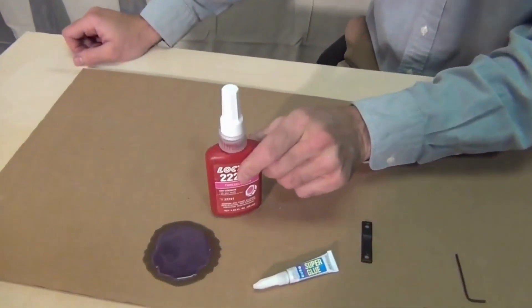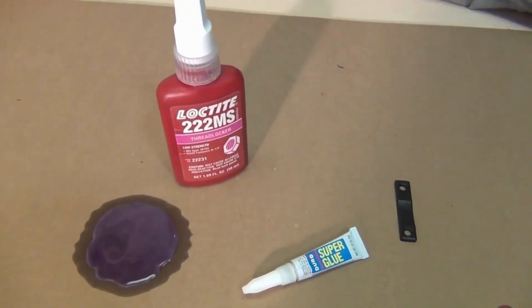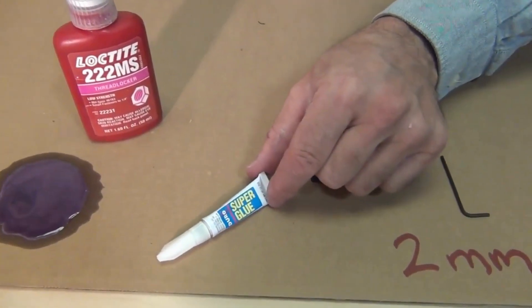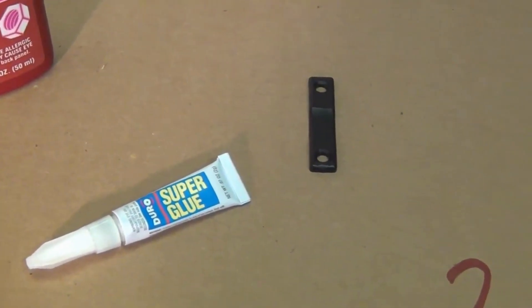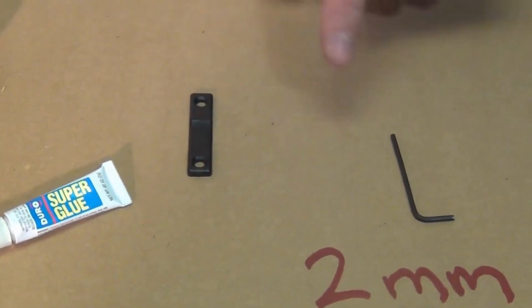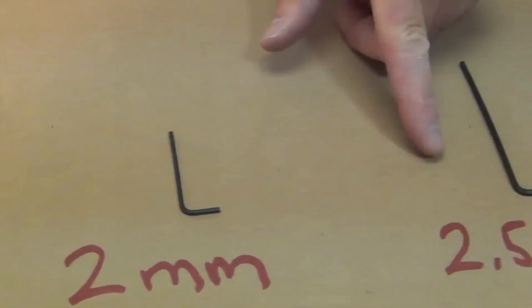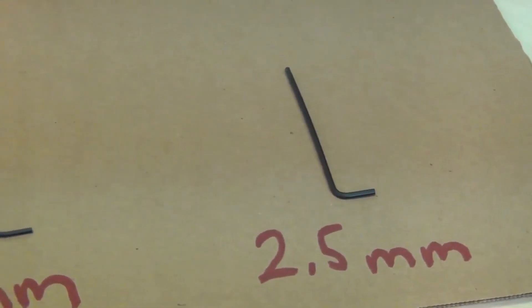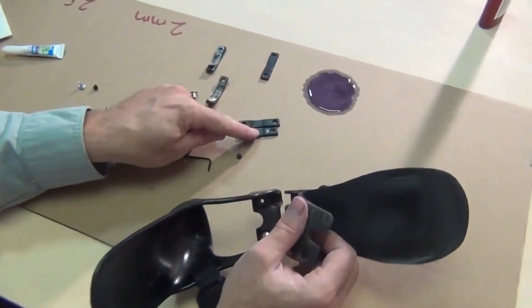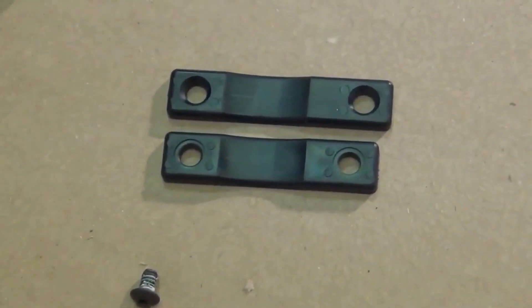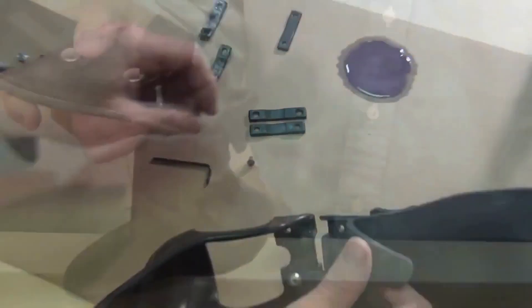What we'll need is some Loctite. We use purple, but blue is acceptable. Some super glue, any brand name will do. A longer tensor, two millimeter Allen, and a two and a half millimeter Allen wrench. As you can see, this is longer, but not by a lot, but enough to give us just the angular change we need.